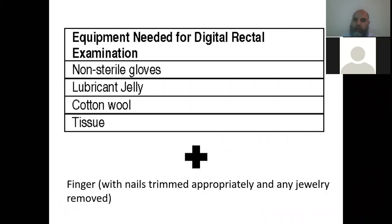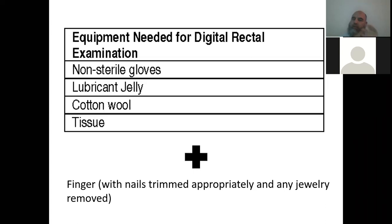Equipment required: common non-sterile gloves — you don't need sterile gloves for this procedure. You need lubricant jelly, cotton or gauze to clean, and tissue papers. Your nails should be trimmed and there should be no jewelry such as rings on the examining finger, as that can cause trauma and injury.